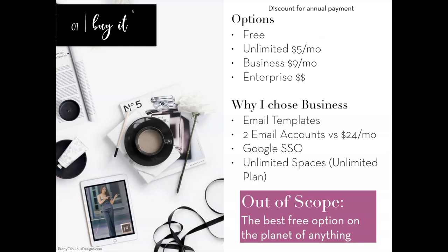The first thing you need to do is sign up — it's free. Anything I ever review, I'm never trying to get the bargain basement — I'm happy to pay for a high-quality product. The free plan is fine if you just want to try it out. Unlimited gives you unlimited spaces. I started with Unlimited, then switched to Business because you can use Google single sign-on, which is much easier. The second reason is I can have two email accounts, since I'm running two different businesses, and I can do email templates instead of copying and pasting each email.